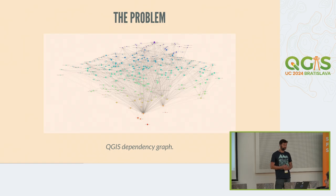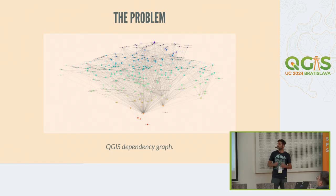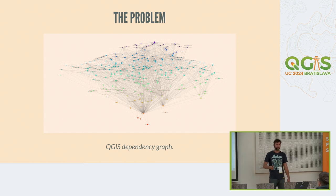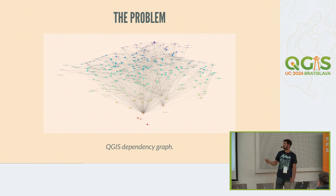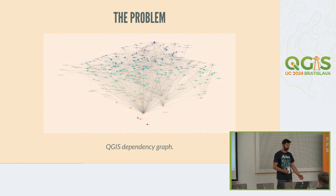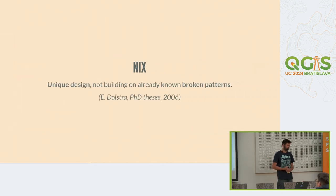The problem is that all those points represent all those bits and pieces which are actually needed to run QGIS, and all those lines represent some kind of relationships between all the dots and pieces. So it's quite apparent that it's not a trivial task to put this all together and make sure that it works and isn't broken somewhere.